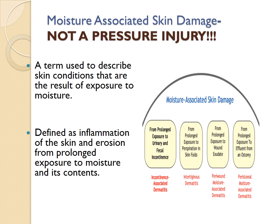There's another wound category: moisture-associated skin damage. This often happens in patients who are incontinent or who have any type of skin damage due to moisture. These are often misclassified as pressure injuries, which increases the reported prevalence of pressure injuries in acute and long-term care. But this is an entirely different type of wound, and the care needs to be addressed differently — we're going to talk about that in class.